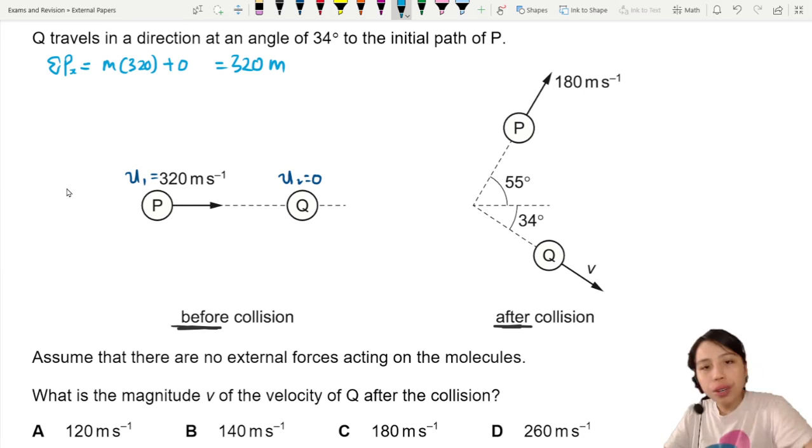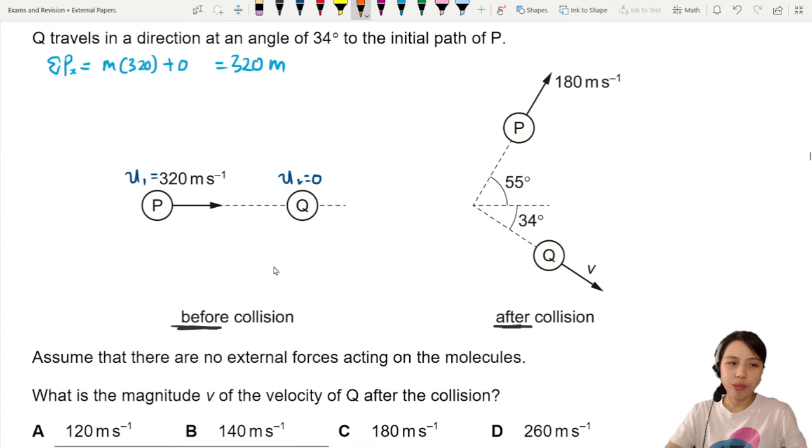So vertical component is zero. After collision, now you have both components.